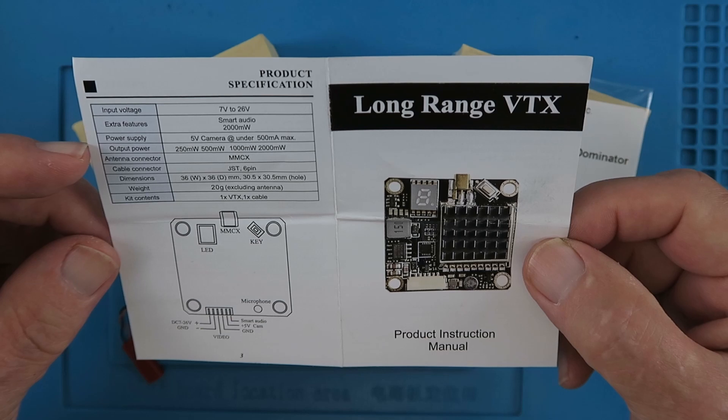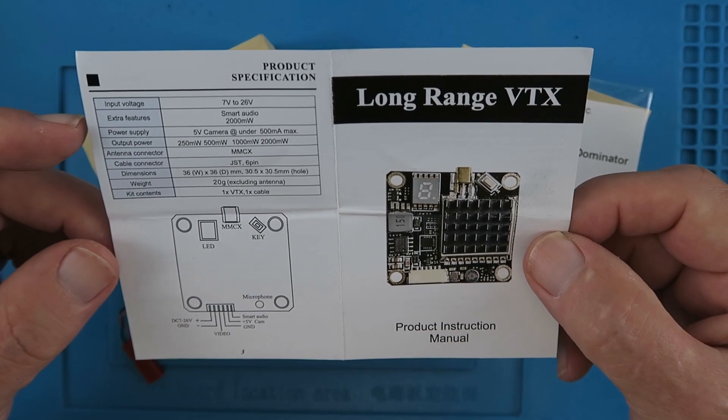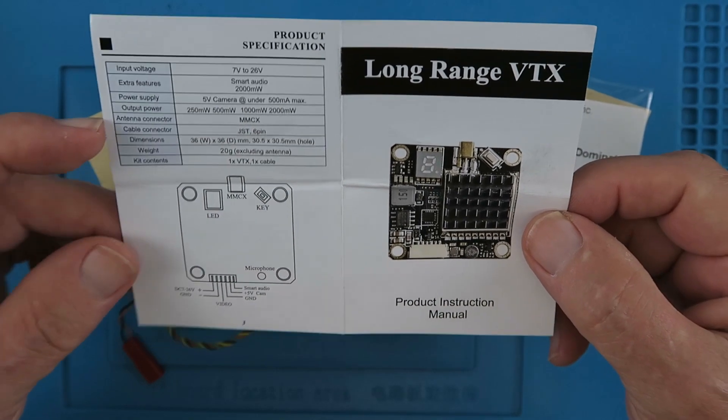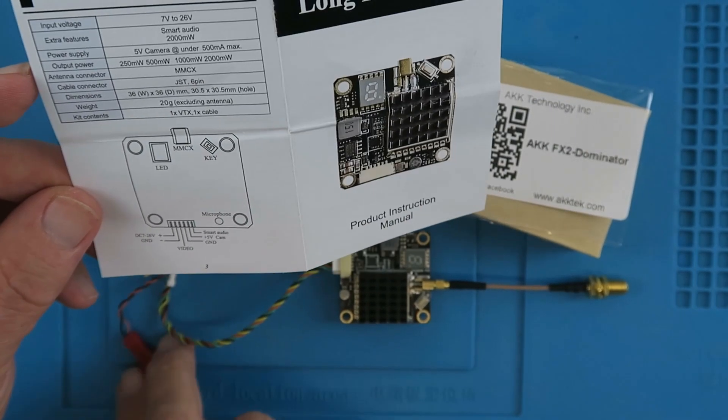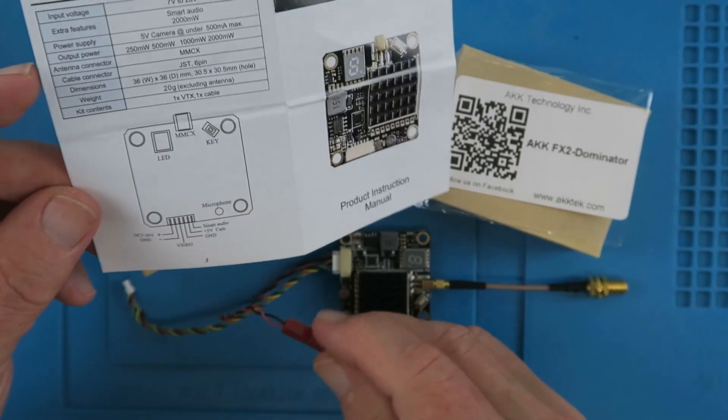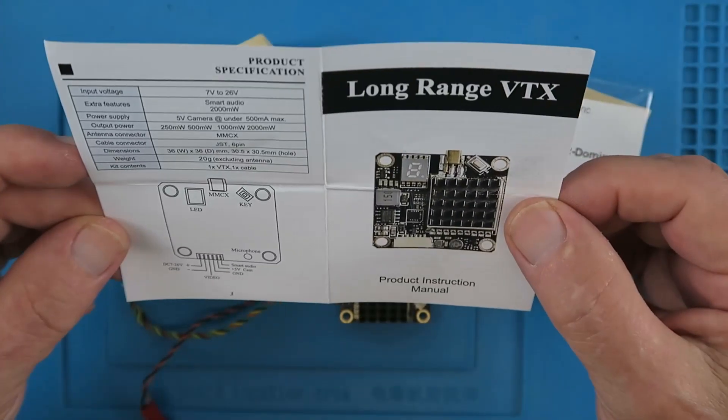500, 1000 and 2000 milliwatts. My word. The antenna connector is the MMCX type and the power supplied by a JST, so that's fairly conventional stuff.